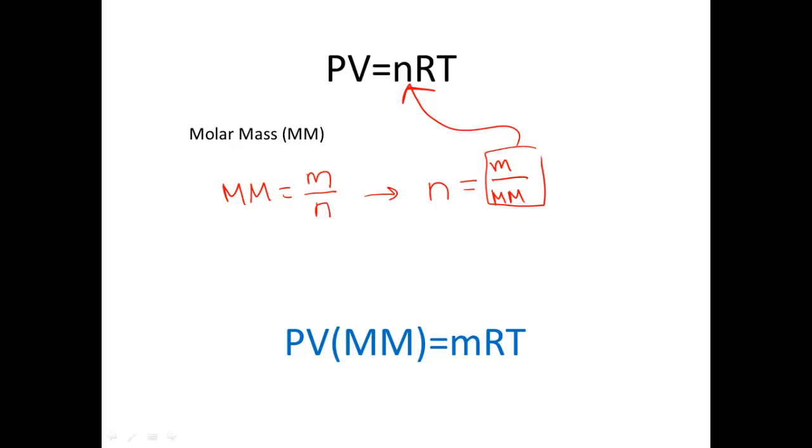So, our new version of the ideal gas equation is pressure times volume times your molar mass is equal to your mass times your gas constant and your temperature, in Kelvin, of course.